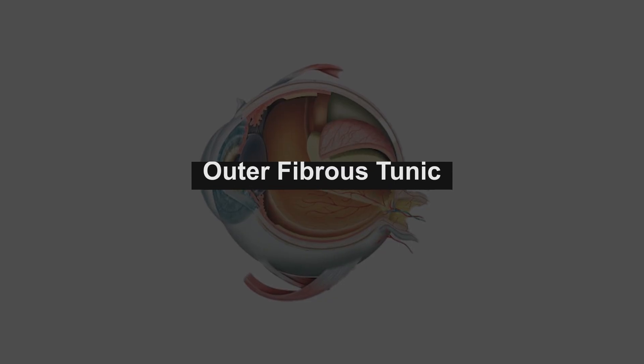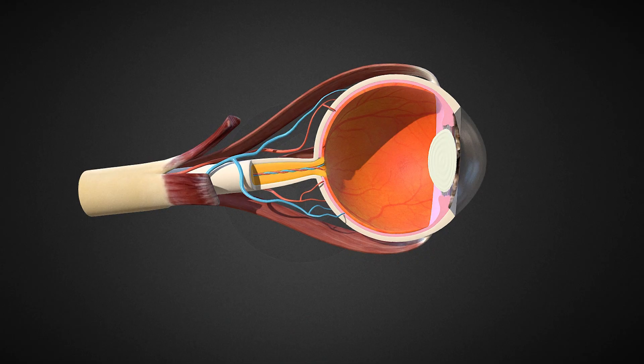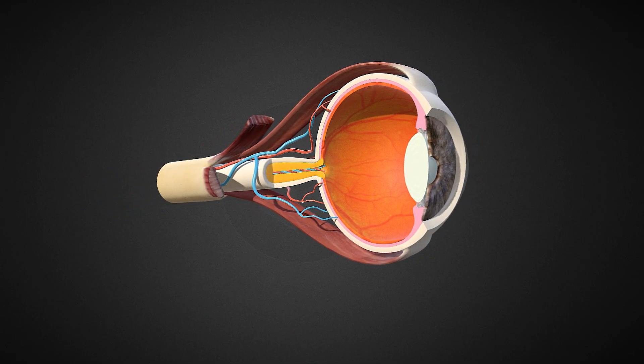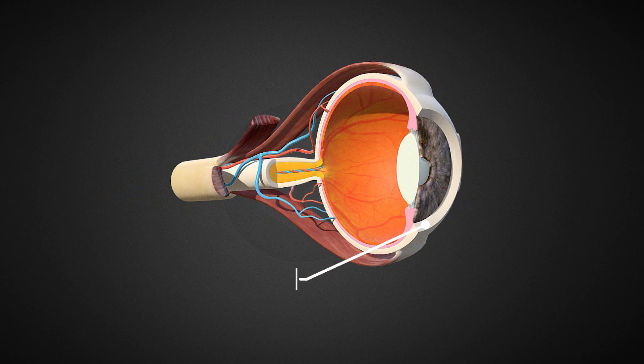The outer fibrous tunic consists of the sclera and the cornea. The sclera is a dense white protective layer that maintains the shape of the eyeball and provides an attachment for the eye muscles.